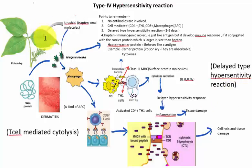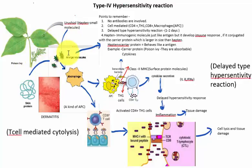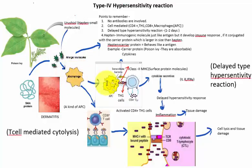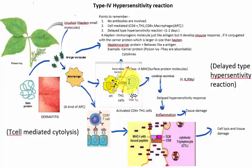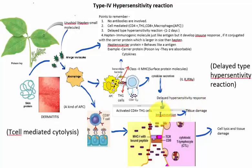This is the poison ivy plant. It contains urushiol hapten, which is small in size. When a person gets in contact with the urushiol hapten, it forms a conjugate with skin proteins and behaves like an antigen. The antigen is engulfed by the macrophage, which is the antigen presenting cell, and the macrophage presents the antigen on the surface via class II MHC protein. The T helper cell combines with the class II MHC protein using the CD4+ glycoprotein and releases cytokines, resulting in delayed hypersensitivity response. After one or two days, inflammation occurs, resulting in tissue damage.